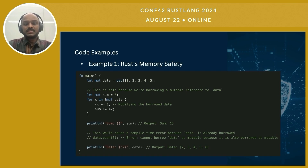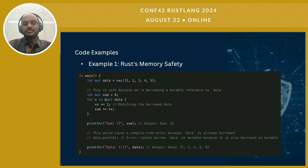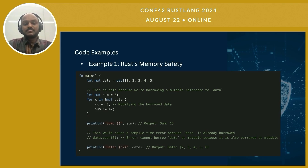Let's look at some code examples. Here we are looking at Rust's approach to memory safety. One of the core features that makes Rust stand out is its ownership model, which ensures that each piece of data has a single owner at a time. Here we have a mutable vector of integers. Rust allows us to borrow this data mutably, meaning we can modify the data safely without risking data races or memory corruption. The for loop demonstrates this by modifying each element in the vector while summing them up. Notice that even though we are modifying the vector, Rust guarantees that the data is handled safely. The Rust compiler would throw an error if we attempted to push new data into the vector while it's being borrowed, preventing potential issues like segmentation faults or undefined behavior.